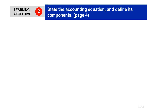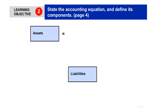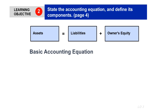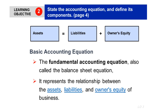Accounting is based on one fundamental equation: Assets = Liabilities + Owner's Equity. This is the basic accounting equation, sometimes also called the balance sheet equation. It represents the relationship between assets, liabilities, and owner's equity.